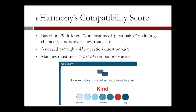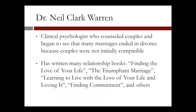How does eHarmony compute a compatibility score? The score is based on 29 different dimensions of personality, including character, emotions, values, traits, and more. The calculation involves a 436-question questionnaire, and matches must meet at least 25 out of 29 compatibility areas. The graph from eHarmony's website shown in the slide describes one such question regarding character.